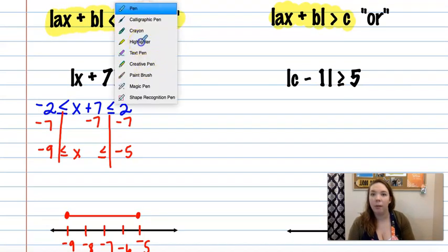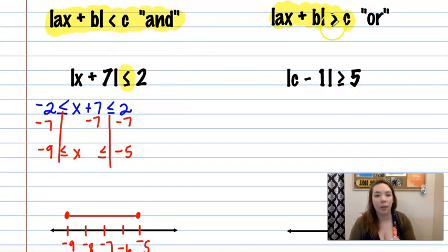Alright, second example. This time we have a greater than. So that means, this kind of looks like an 11, but it's not. It's a 1 and an absolute value. That means we have an or. So when we split it, we actually do have to split it into 2. So we'll have 1 where it's c minus 1 is greater than or equal to 5.